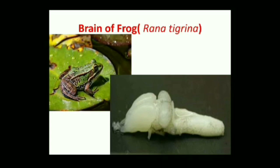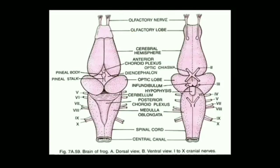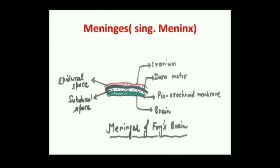The CNS or central nervous system consists of two parts: brain and spinal cord. As they both occupy the central axis, the middle line of the body, that is why they are said to be part of the CNS. We are going to start with the brain of frog. This is the view of the brain of frog — one is dorsal view and the other is ventral view.